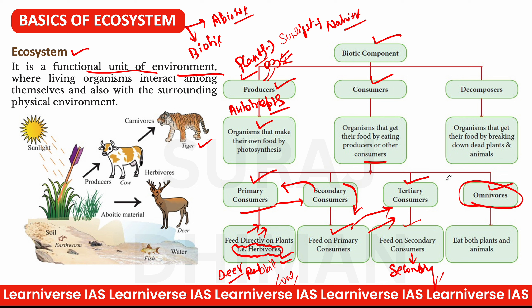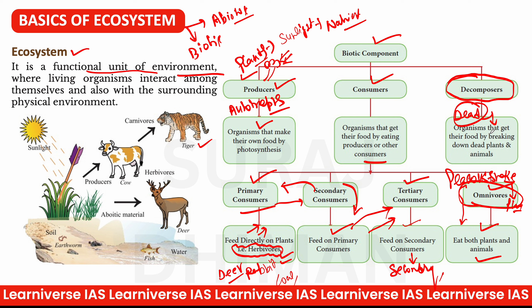कुछ omnivores होते हैं जैसे peacock — जो snake भी खाते हैं और plants को भी खाते हैं, यानि दोनों plants और animals पे feed करते हैं। और जो dead remains को feed करते हैं — dead plants और dead animals को खाने वालों को decomposers कहते हैं। तो biotic component में तीन होते हैं — producer, consumer, और decomposers।